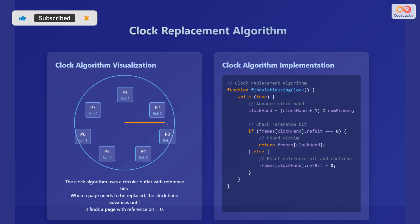Let's take a closer look at the clock replacement algorithm. The clock algorithm uses a circular buffer, like a clock face, with each frame having a reference bit. When a page needs to be replaced, the clock hand advances, checking the reference bit of each frame. If the reference bit is 0, meaning the page hasn't been recently used, it's selected as the victim. If the reference bit is 1, it's set to 0, and the clock hand continues to advance.